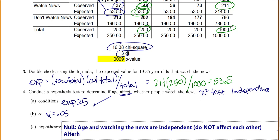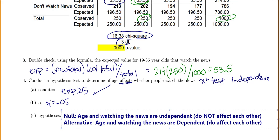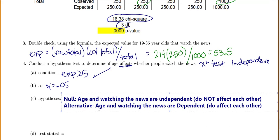And the alternative is that age and watching the news are dependent, meaning they do affect each other. And that's always our null and alternative for the chi-square test of independence. The null has to be the independence because that's how we actually calculate all of our probabilities.